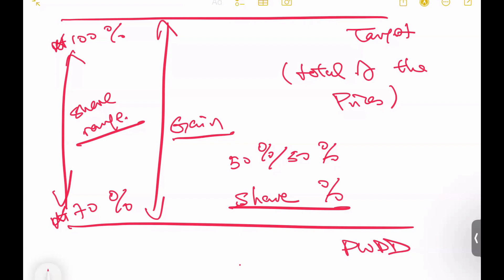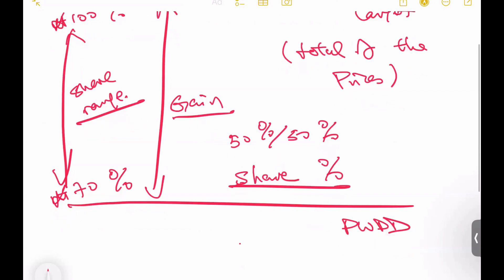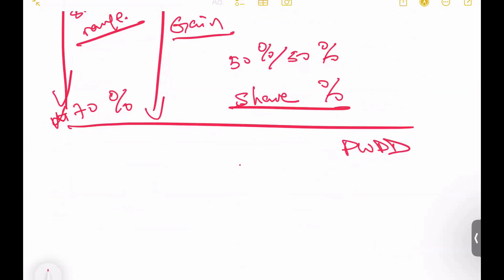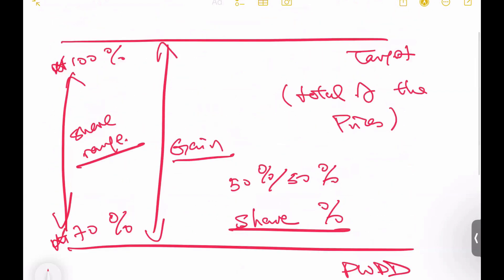Why do we need to use a percentage for the share range instead of an absolute number? The answer is the target will change. The target being the total of the prices will change. If we use an absolute number, we may go into some troubles when we want to manage this pain-sharing-gaining mechanism. Therefore, we want to set the target - even though it's changing, we set it as 100% and compare that with the PWDD.